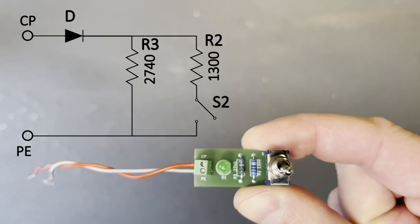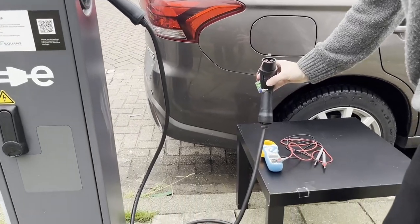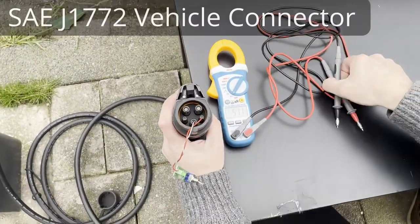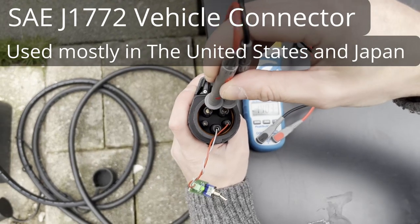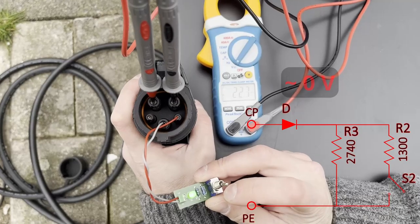This is compliant with EV charging standards. If you're in the United States or Japan you will have this type of connector. Mind the pins. You will connect the previous circuit to control pilot and protective earth.